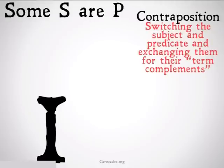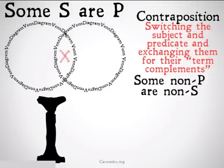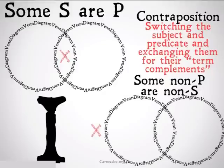This is also a fallacy for I statements. Some S are P — we fill in our Venn diagram as normal. The contraposition of that is: some non-P are non-S. In this case, we would put the X actually outside the Venn diagram. It's basically saying that some things that are not P are also things that are not S — clearly saying something very different from 'some things that are S are things that are P.'